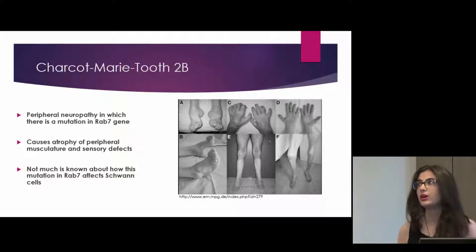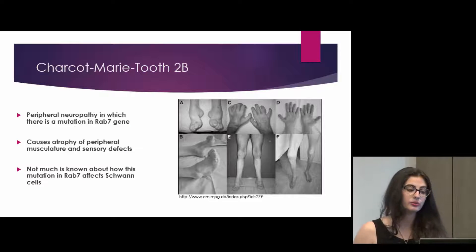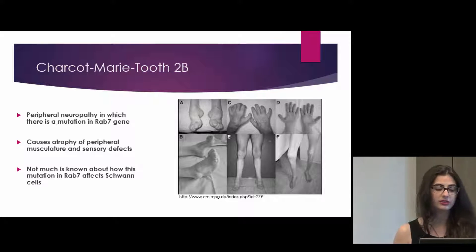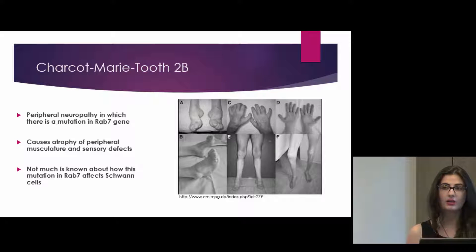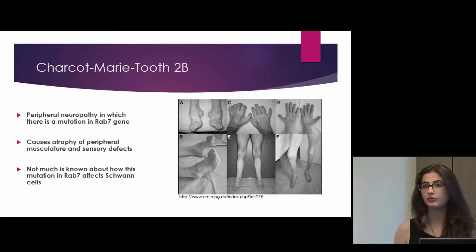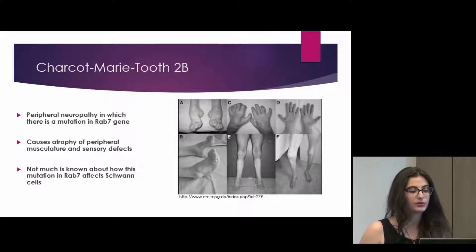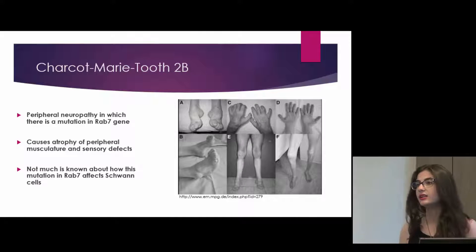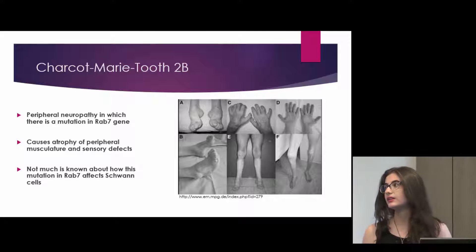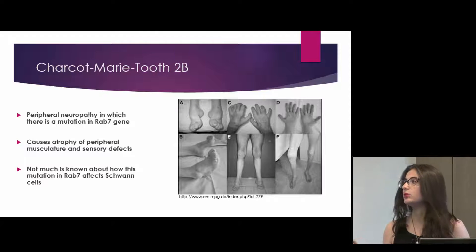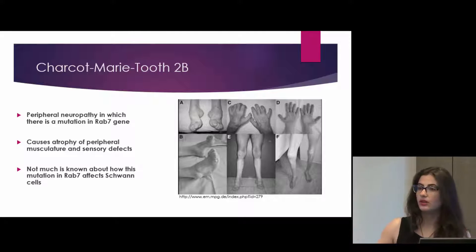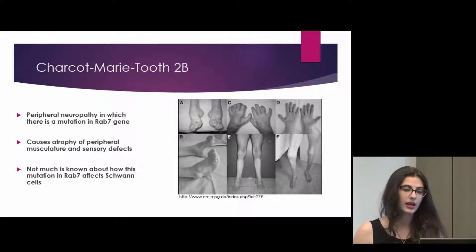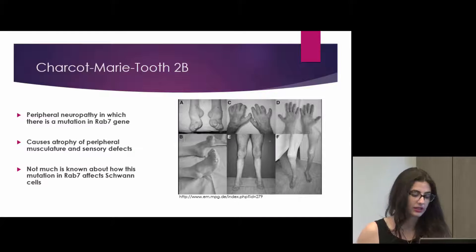There is a peripheral neuropathy called Charcot-Marie-Tooth-2b that causes atrophy of peripheral musculature and sensory defects. Since it's a peripheral neuropathy, we want to look at Schwann cells and the effect that a mutation in RAB7, which causes Charcot-Marie-Tooth-2b, has on Schwann cells themselves and their effect on myelination.